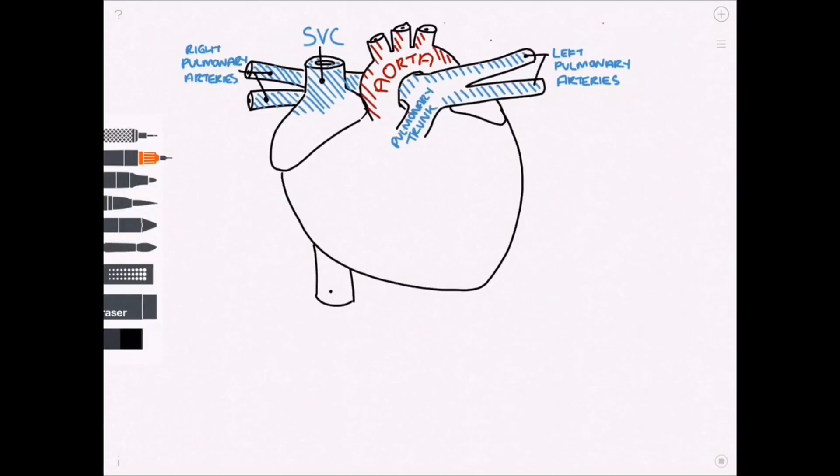Draining into the right atrium is the vena cava, the superior and inferior branches, both draining, bringing deoxygenated blood from the body into the right atrium.